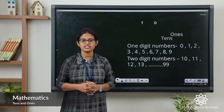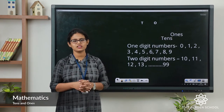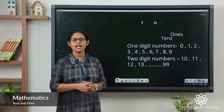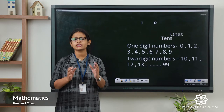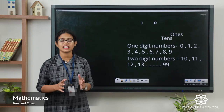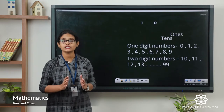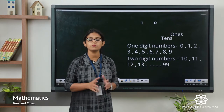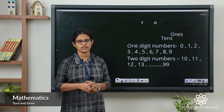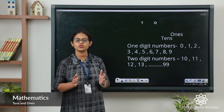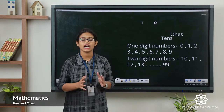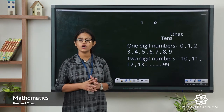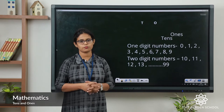First let's see what are one-digit numbers and two-digit numbers. Numbers with a single digit we call one-digit numbers. Here you can see numbers from 0 to 9: 0, 1, 2, 3 — they are all one-digit numbers. Why? Because there is only one digit.